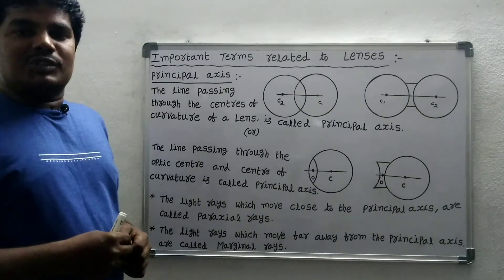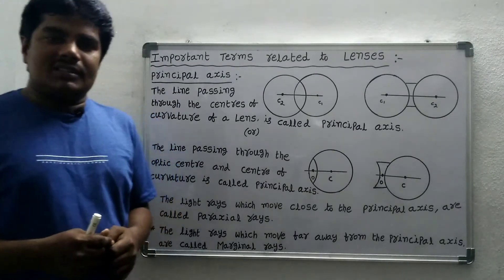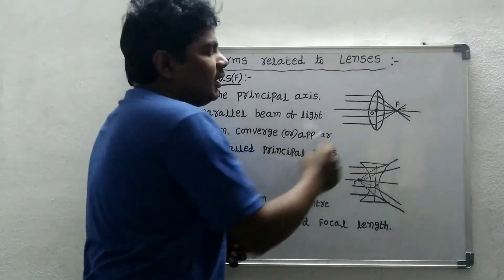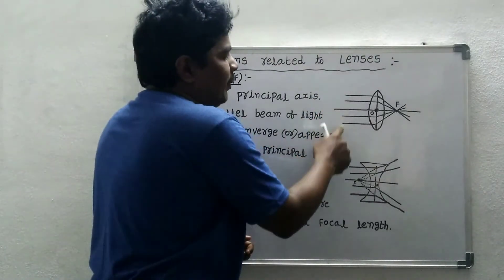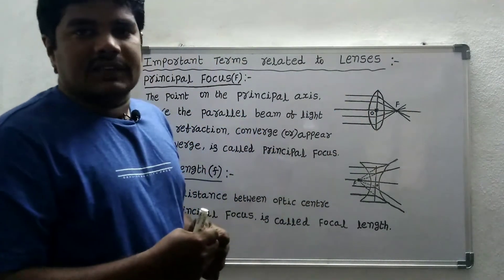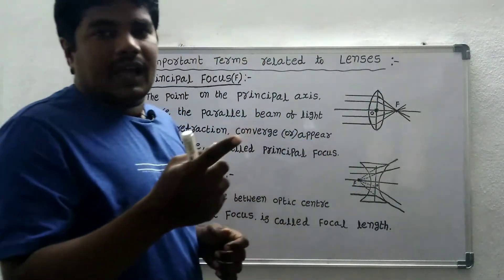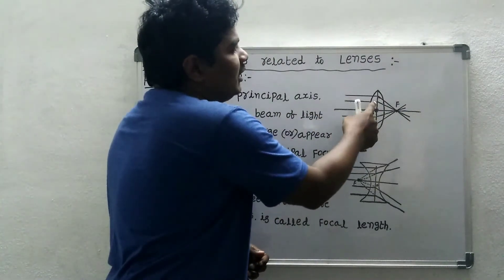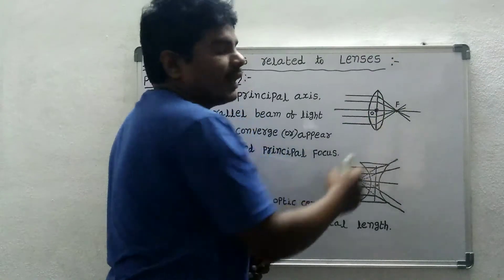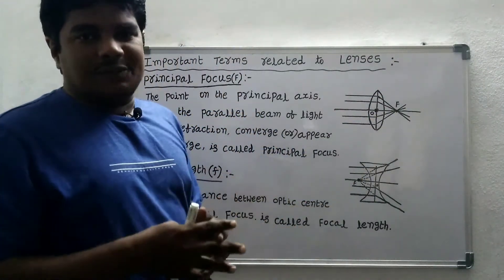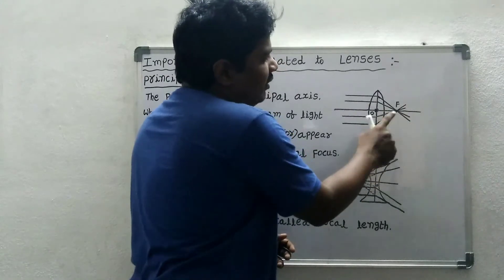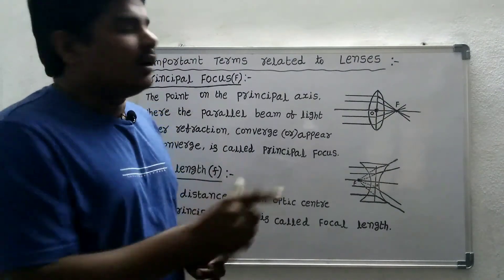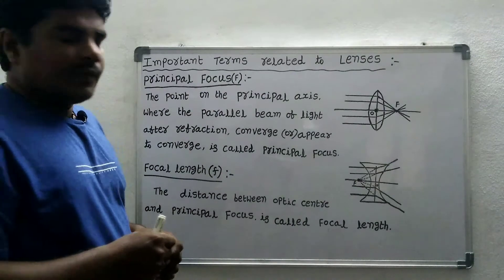Next: principal focus. For a convex lens, a parallel beam of light is incident on it. The convex lens is a denser medium and air is the rarer medium. As light travels from the denser medium to the rarer medium, it gets refracted. After refraction, the light converges at a point on the principal axis, and that point is called the principal focus.